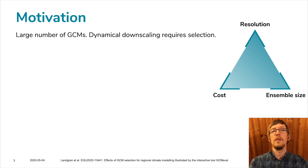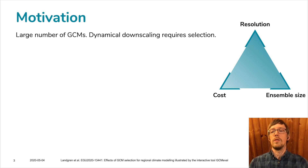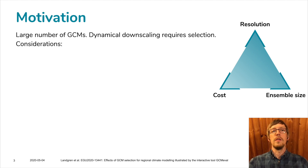One of the motivations behind this is that there is a very large number of global climate models and it can be for many users impossible to use all of them. So you have to make a selection. For regional climate modelers, the example here on the right is where you have to make a priority between high resolution, large ensemble size, or low cost in terms of computational power required.